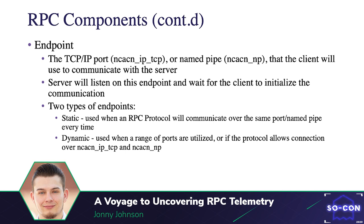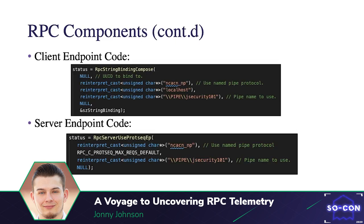There are two types of endpoints: static, where an RPC protocol communicates over the same port or named pipe every time consistently; and dynamic, where a range of ports are utilized or the protocol allows connection over TCP/IP or a named pipe. For example, when I implemented my own interface I specified that the client and server connect over a named pipe called J-security-101.